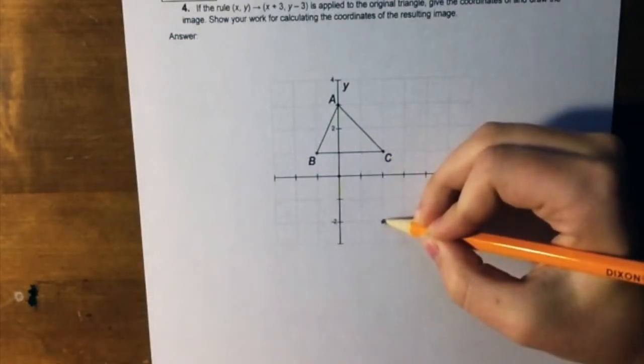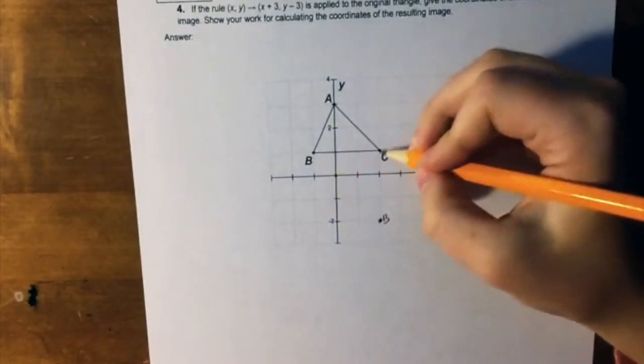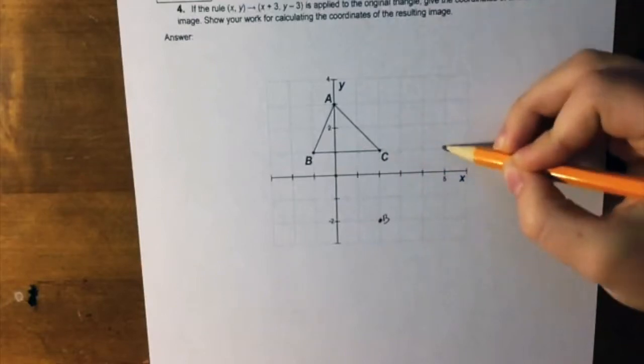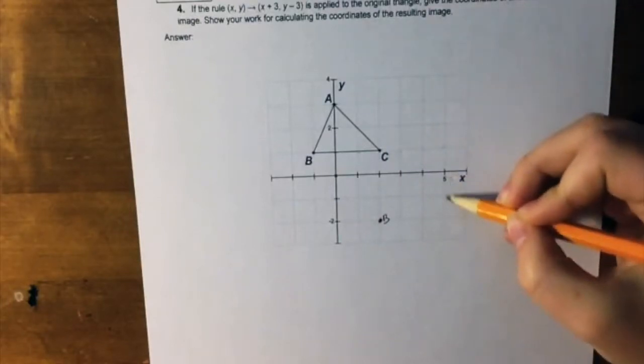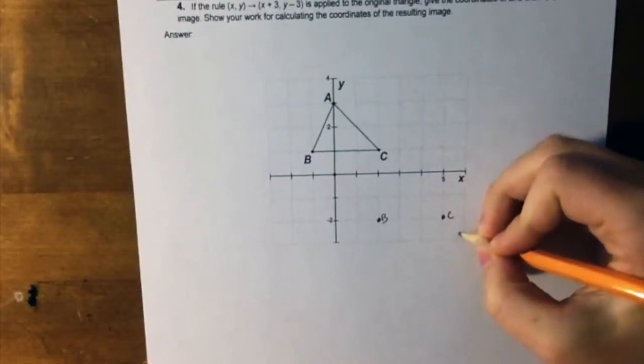So this right here is going to be our new B. We do the same thing for C. You go over, you go plus one, two, three. You go minus one, two, three. You get our new C.